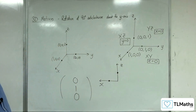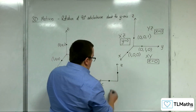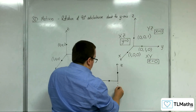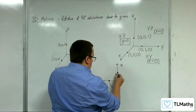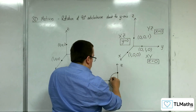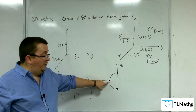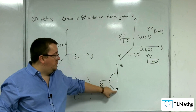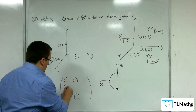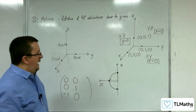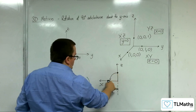So, if they are rotating 90 degrees anticlockwise about the y-axis, then this point here is going to rotate round to that point. This point will rotate round here. So (1, 0, 0) will go to (0, 0, -1), and (0, 0, 1) will go to (1, 0, 0).